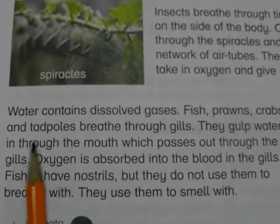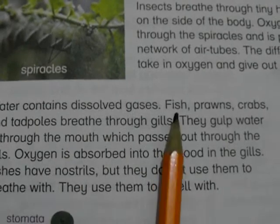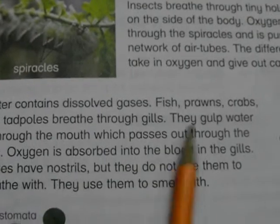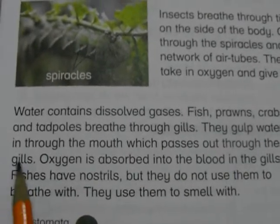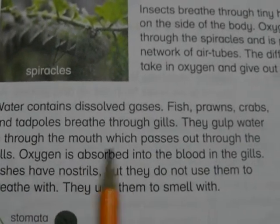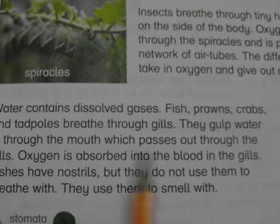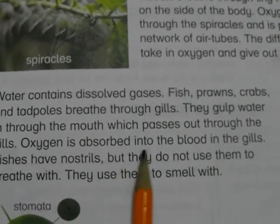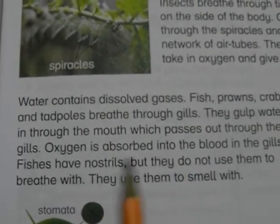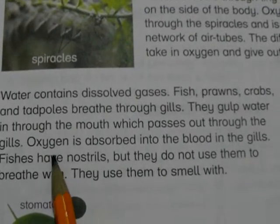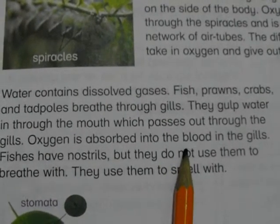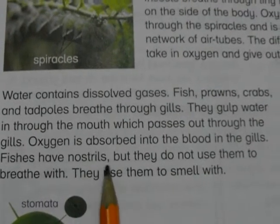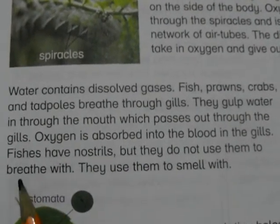Fish, prawns, crabs and tadpoles breathe through gills. Water goes through the mouth and passes through the gills. Oxygen is absorbed into the blood in the gills. Fish have nostrils but they use them to smell, not to breathe.